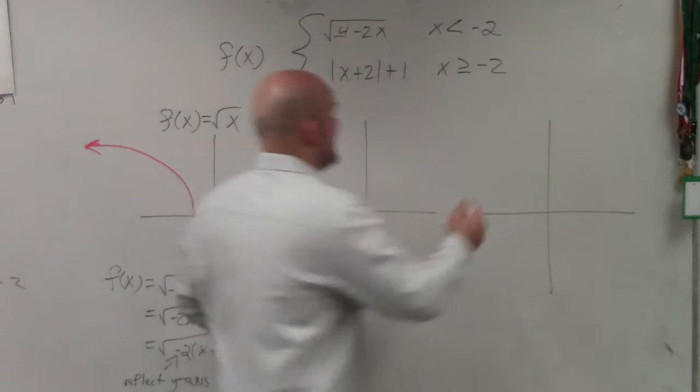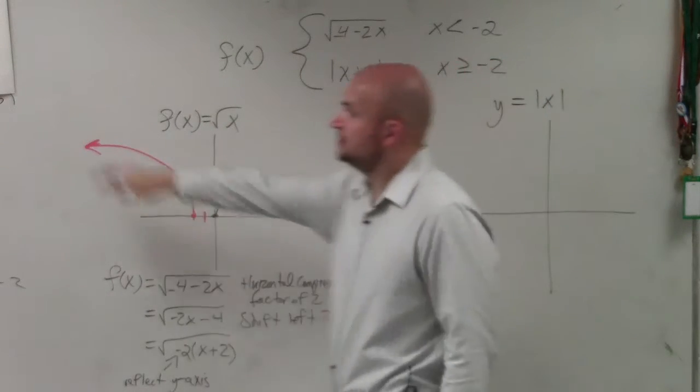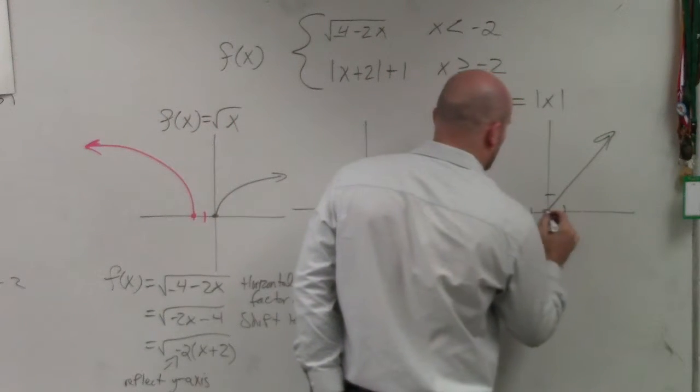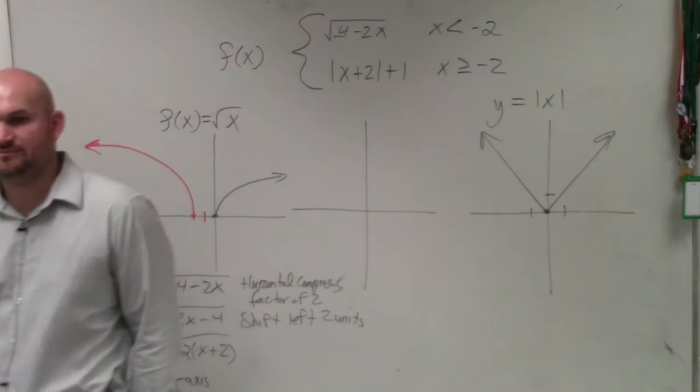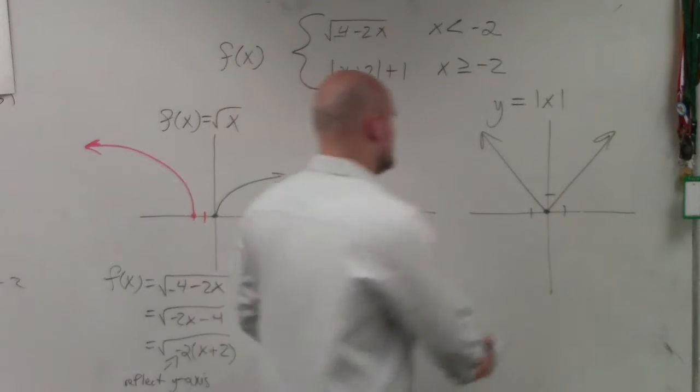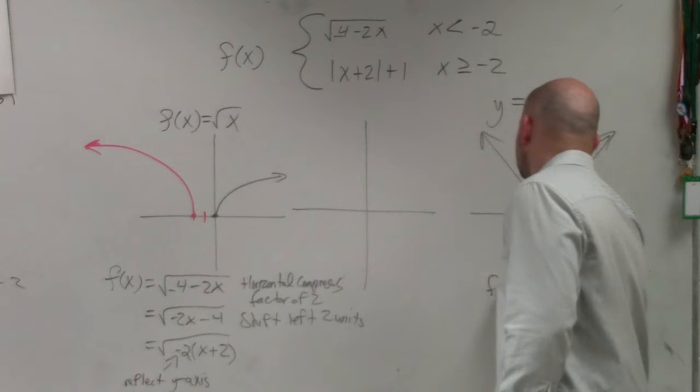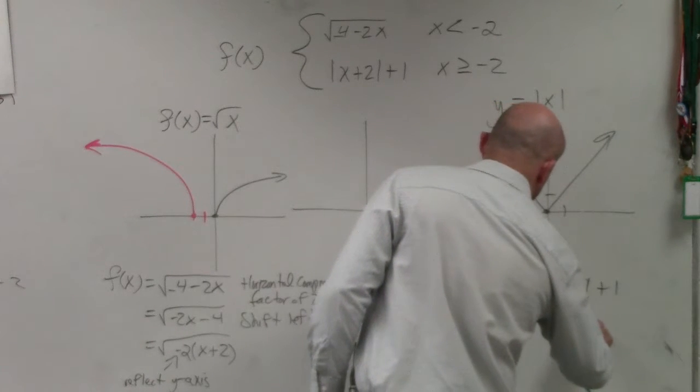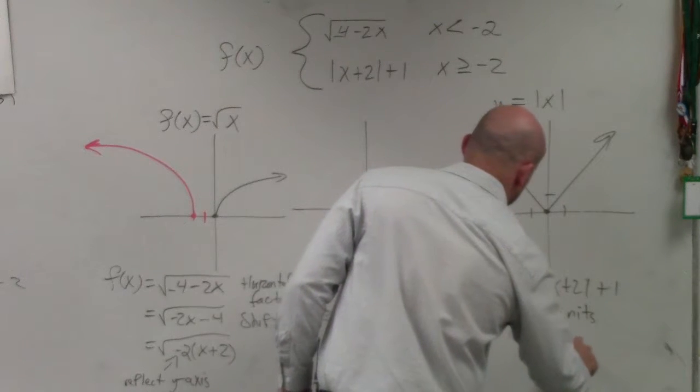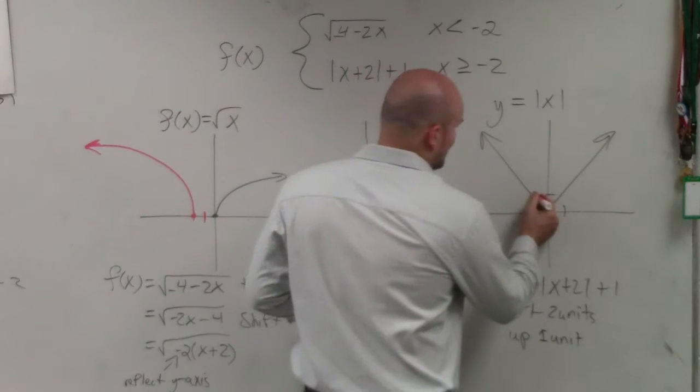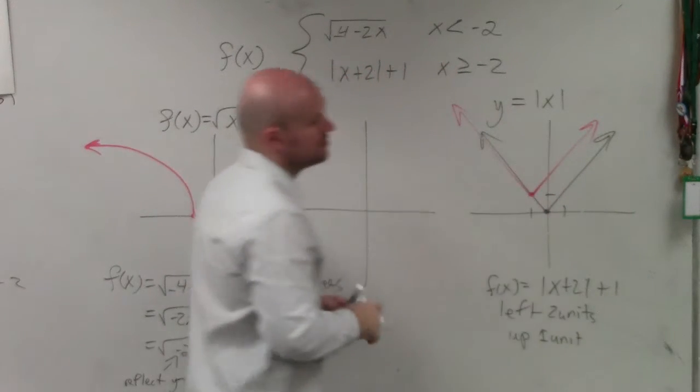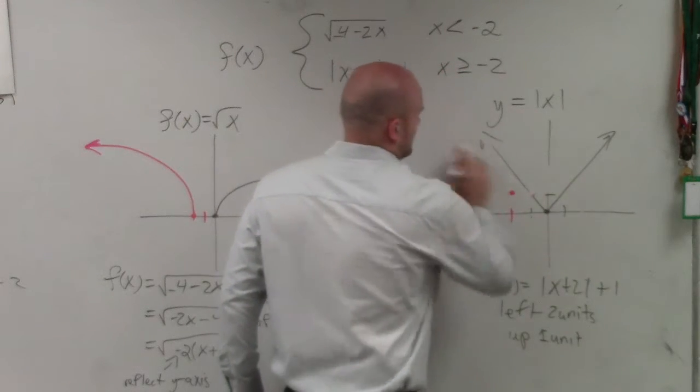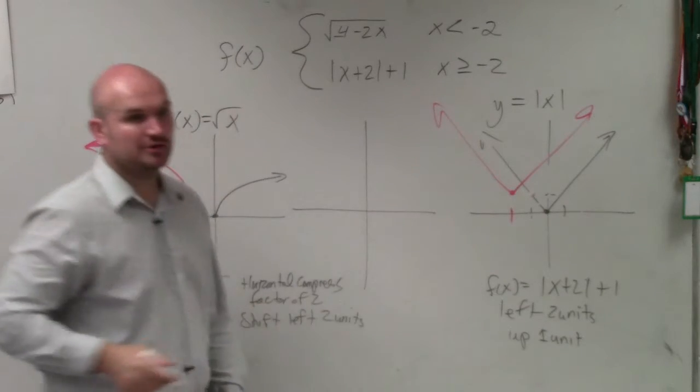Then we go into the absolute value. The absolute value function, y = |x|. You guys should know this from algebra 2. You shouldn't need a graphing calculator to graph the absolute value function. Over 1 up 1. It's a nice V-shaped graph, positive 1 going to the right, negative 1 going to the left. Then we look at our transformations: |x+2|+1. So we're going left 2 units, up 1 unit. So it's basically the exact same graph, moved to the left 2 units.